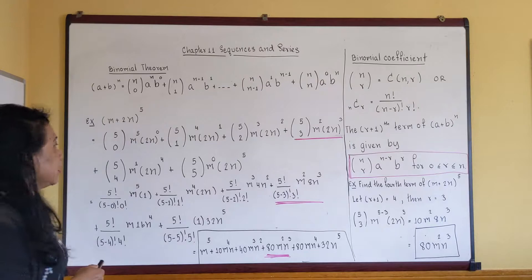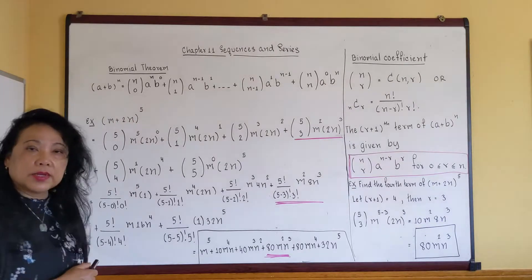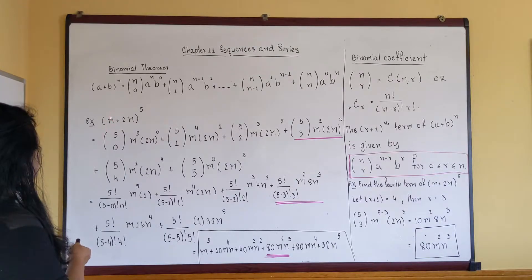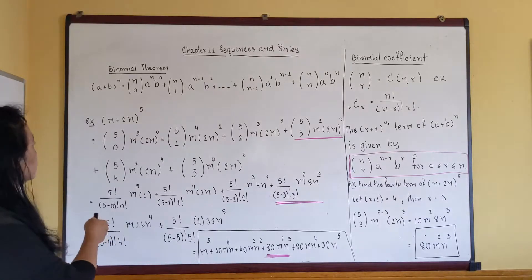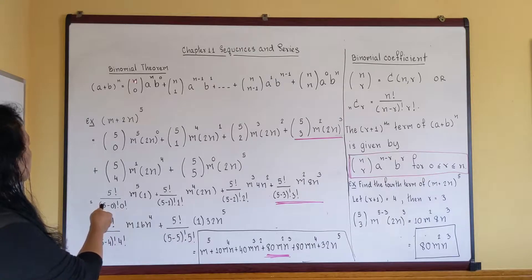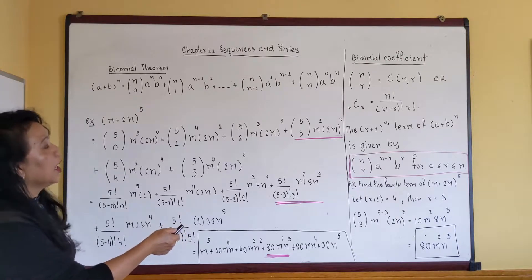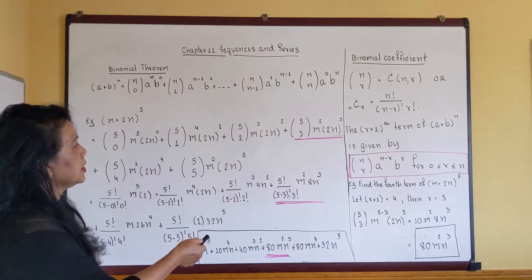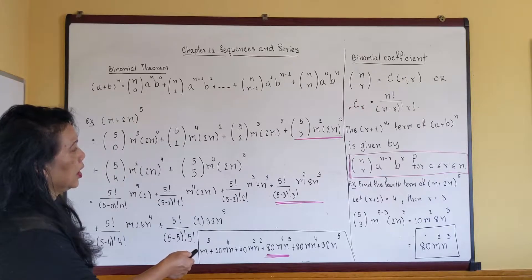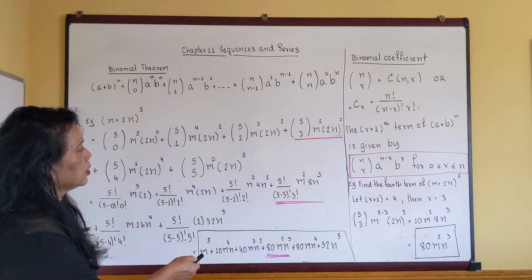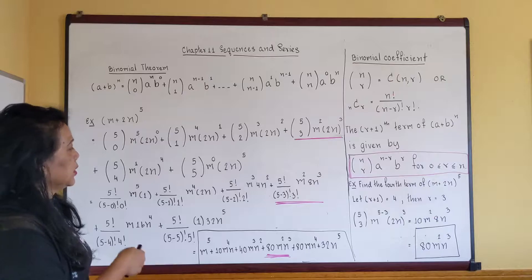Let's look at our example: (m + 2n) raised to the fifth power. My first term is m, my second term is 2n, and my n here is five. We follow the formula. The first factor is called the binomial coefficient, written as n choose r. You can use a calculator with the function C(n,r), or use the formula: n factorial over (n minus r) factorial times r factorial.